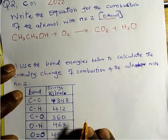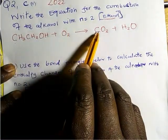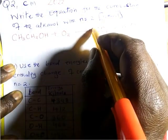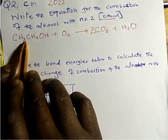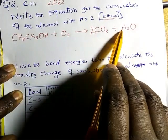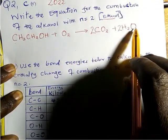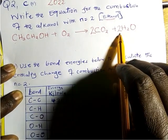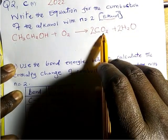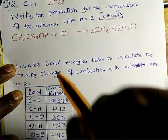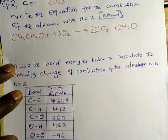The equation needs to be balanced. We have two carbon atoms, so CO₂ gets a coefficient of 2. For hydrogen, we have four on the left and two in water, so we balance by putting 3 in front of water. For oxygen, that gives us a total of six oxygen atoms on the right, so we need 3 O₂ on the left. That now balances.